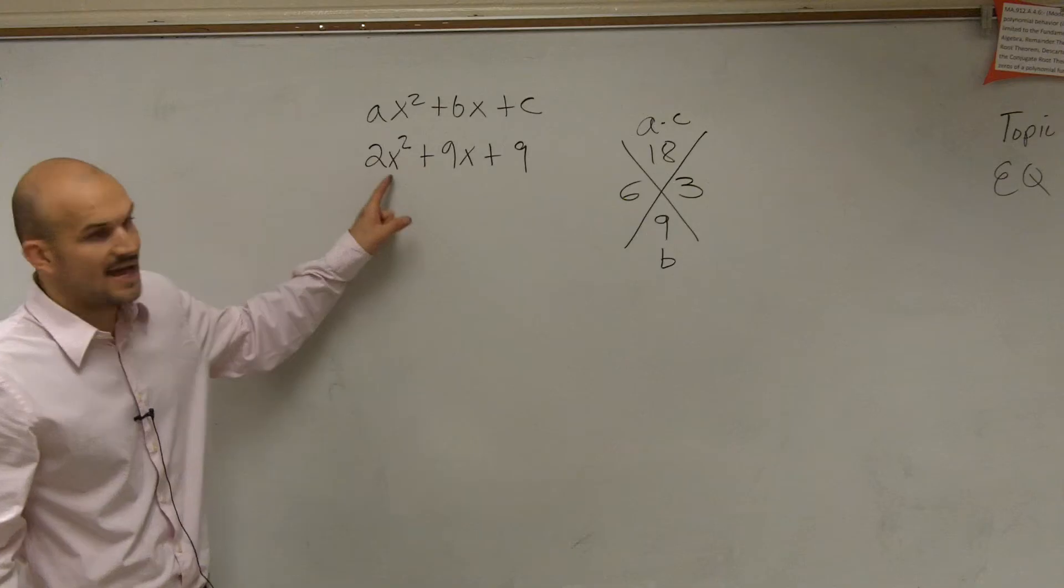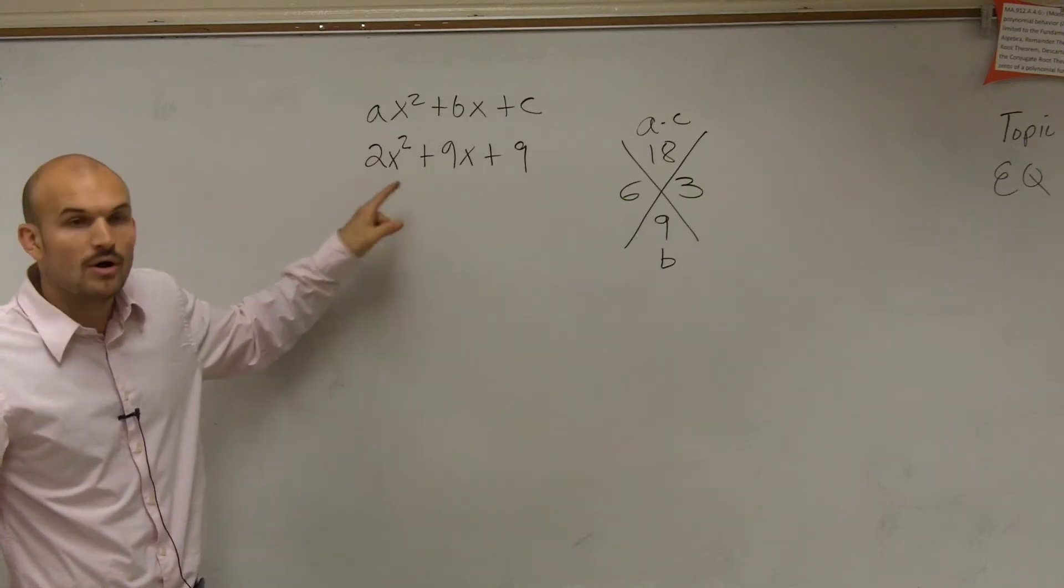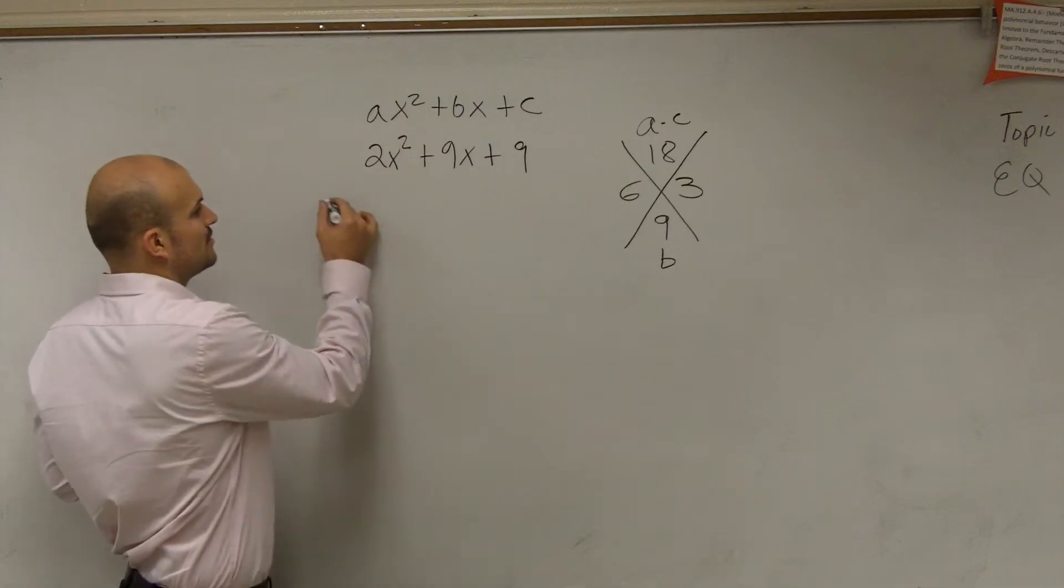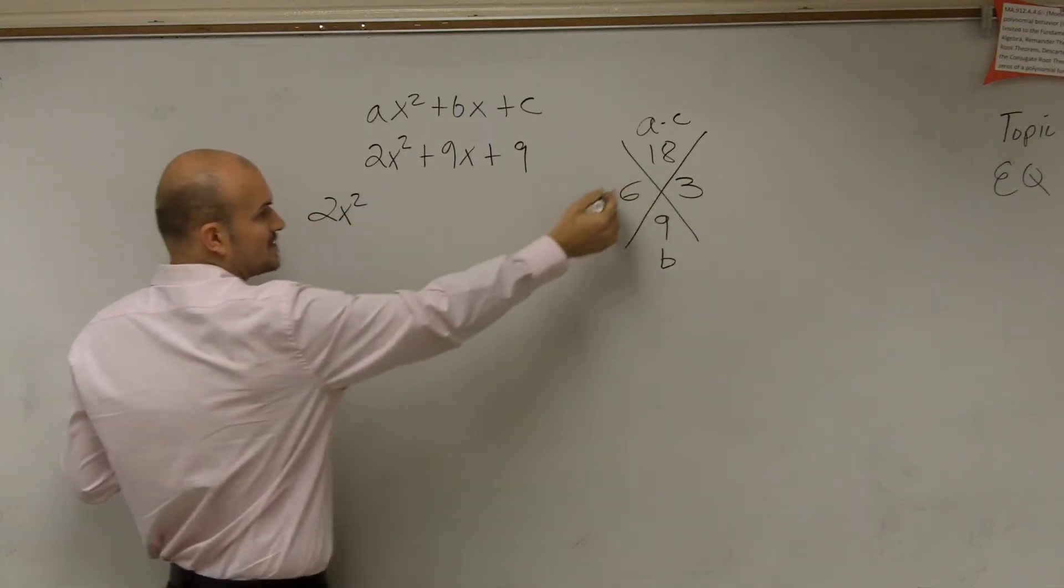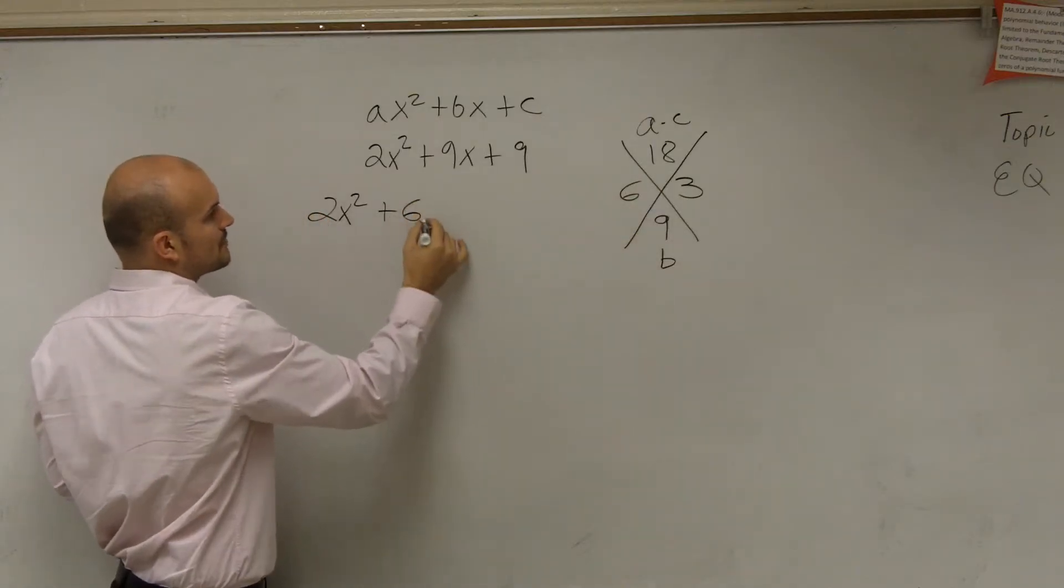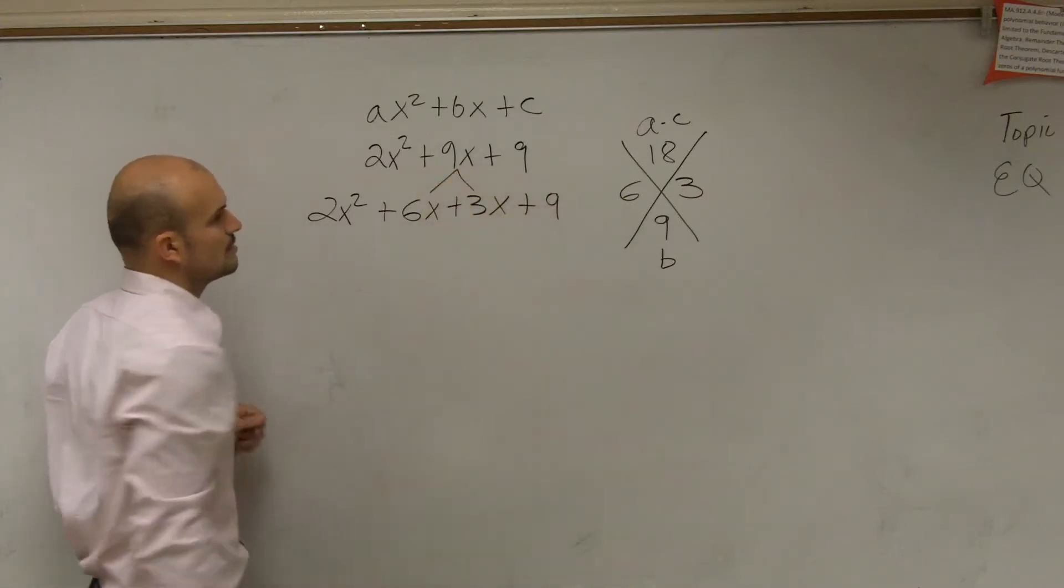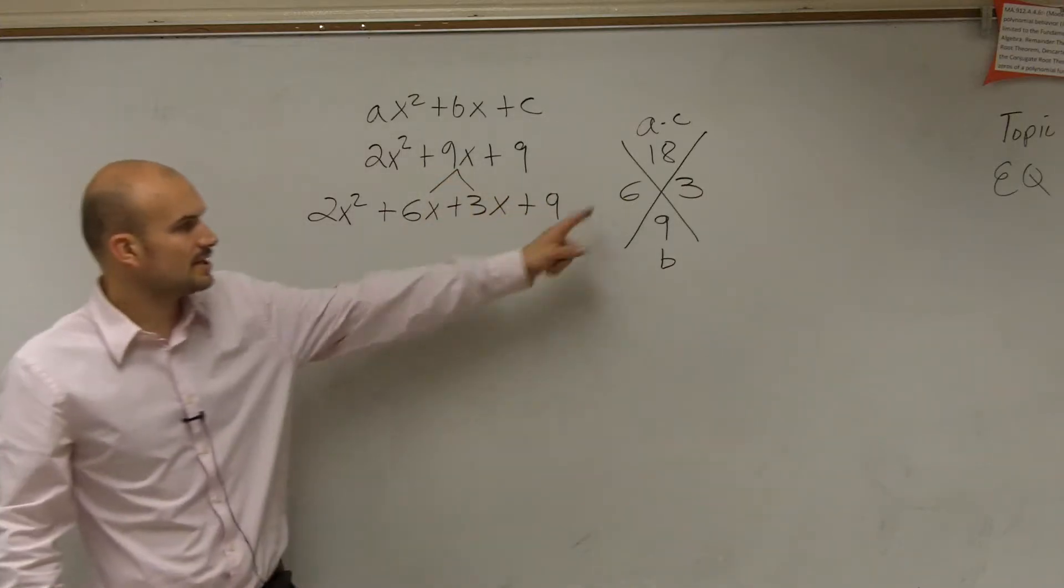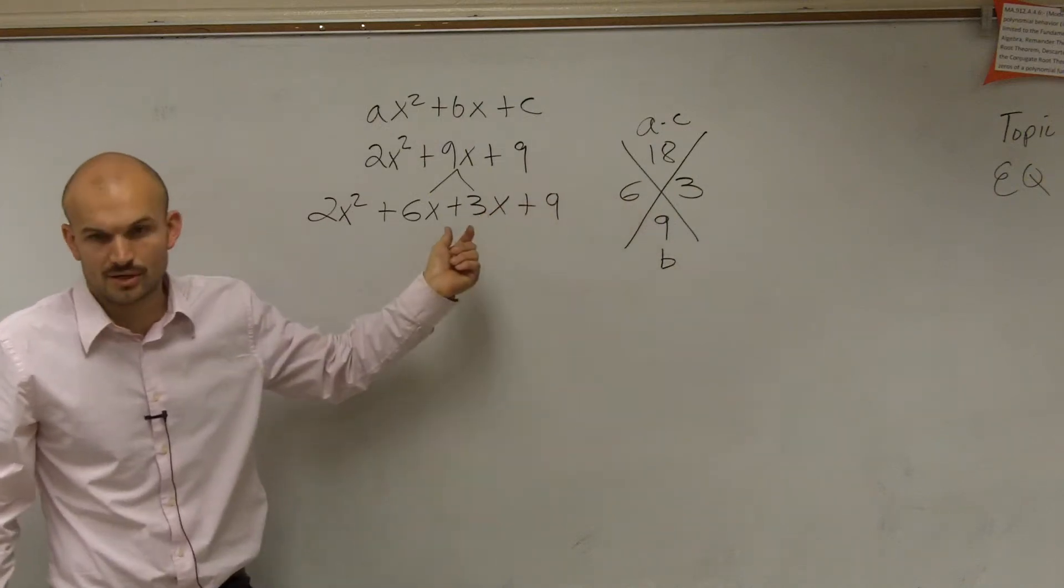So therefore, remember, when a does not have a coefficient of 1, what we need to do is rewrite the problem. These are not your two factors. So we need to rewrite your problem for our middle term. We're going to take those two numbers that we figured out and rewrite them in our middle term.